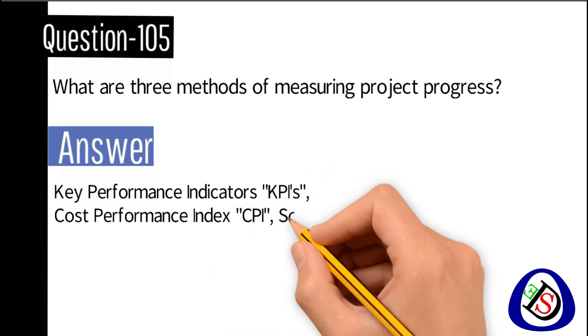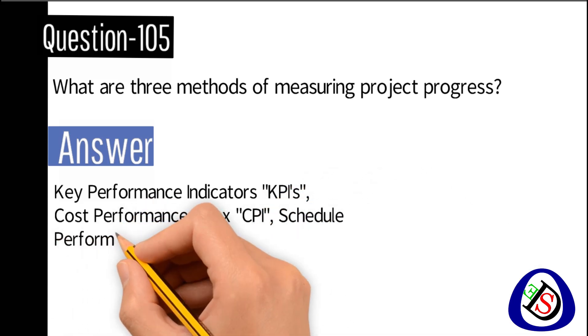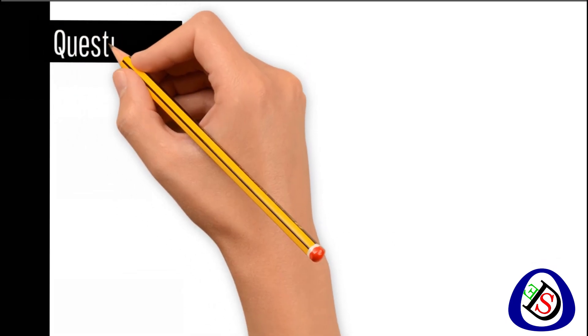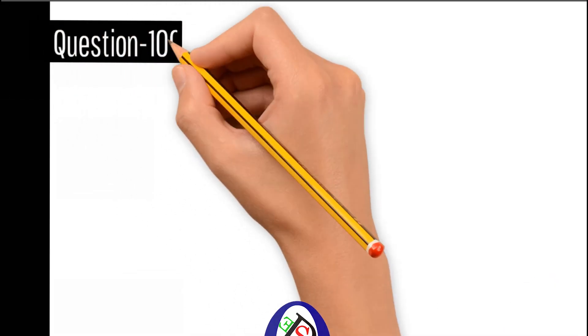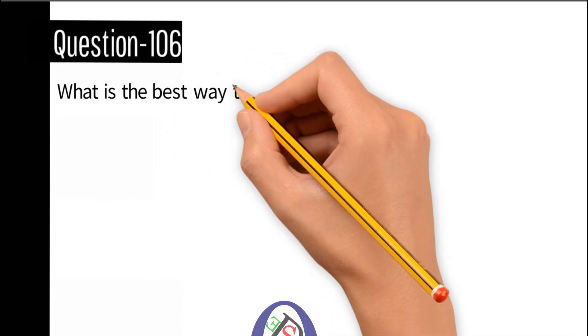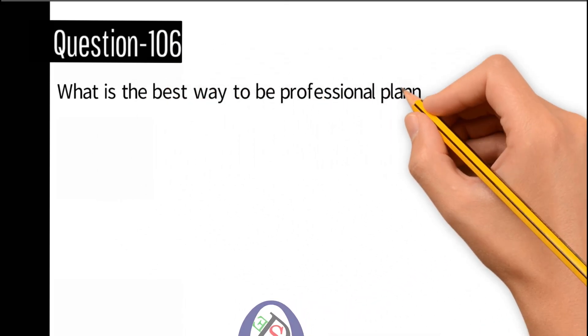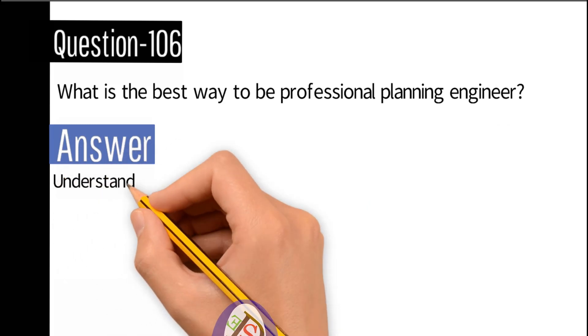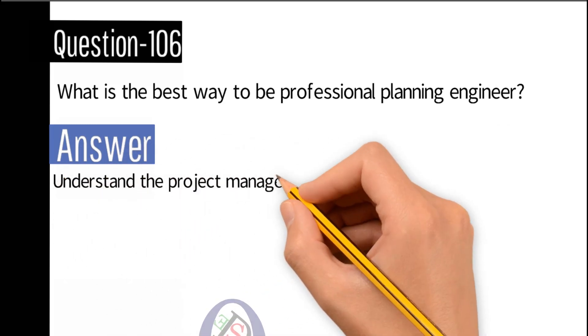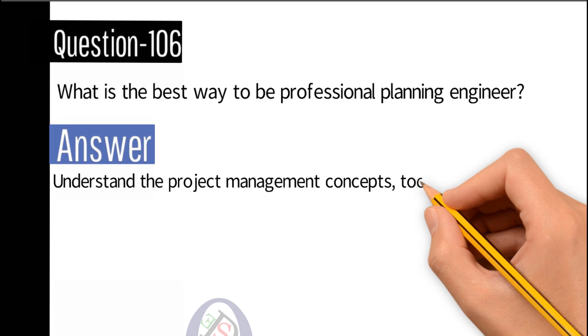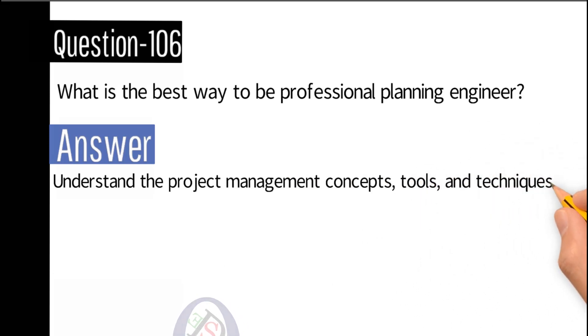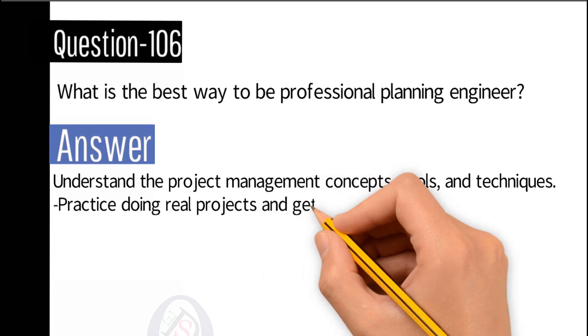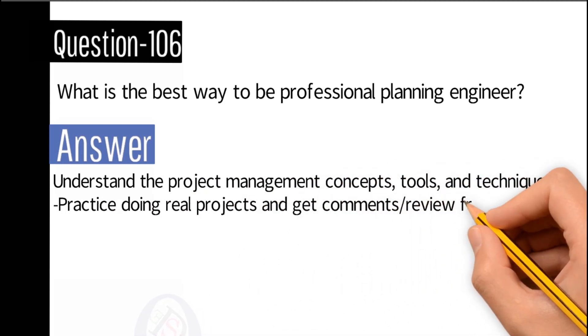Question number 106: What is the best way to be a professional planning engineer? Answer: Understand the project management concepts, tools, and techniques. Practice doing real projects and get comments or reviews from experts.